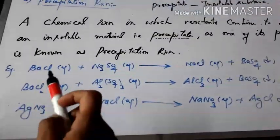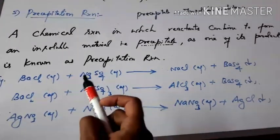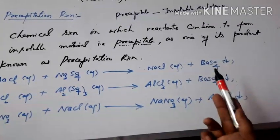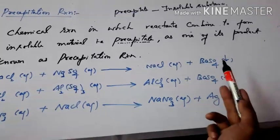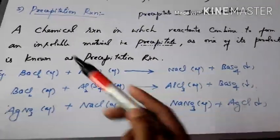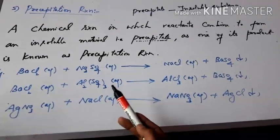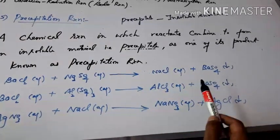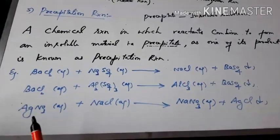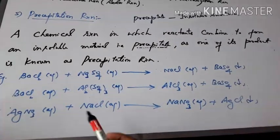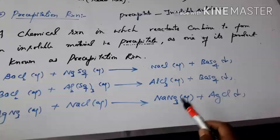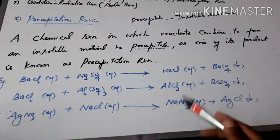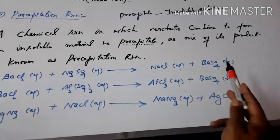For example: barium chloride (aqueous) plus sodium sulfate (aqueous) produces sodium chloride and barium sulfate — barium sulfate is the insoluble precipitate, so this is a precipitation reaction. Also, barium chloride and aluminium sulfate (both aqueous) react to form aluminium chloride (aqueous) and barium sulfate precipitate. Similarly, silver nitrate (aqueous) and sodium chloride (aqueous) form sodium nitrate (aqueous) and silver chloride precipitate. All of these reactions are precipitation reactions because each produces an insoluble substance — a precipitate.